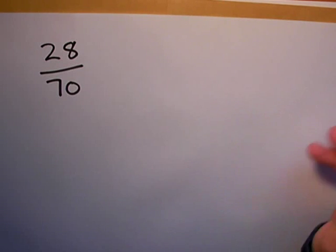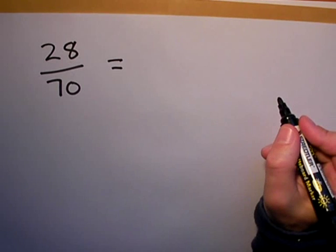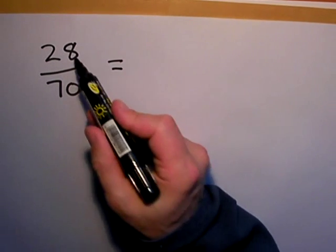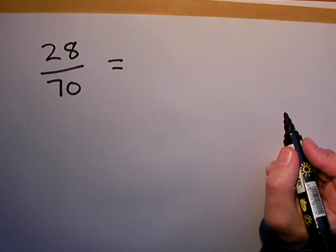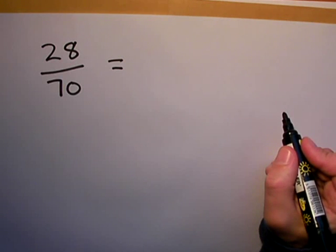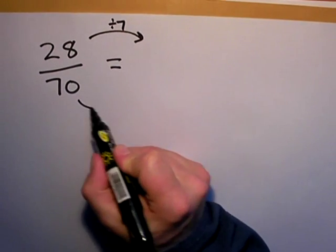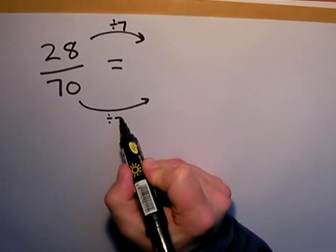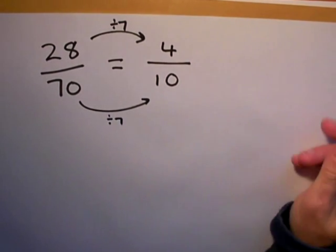So whereas before we could call it cancelling up, this is cancelling down. What I'm looking for is a number that goes into both of these numbers. If you know your times tables, you can see that seven goes into twenty-eight and seven goes into seventy. So if we divide twenty-eight by seven and divide seventy by seven, we get an answer: four tenths.